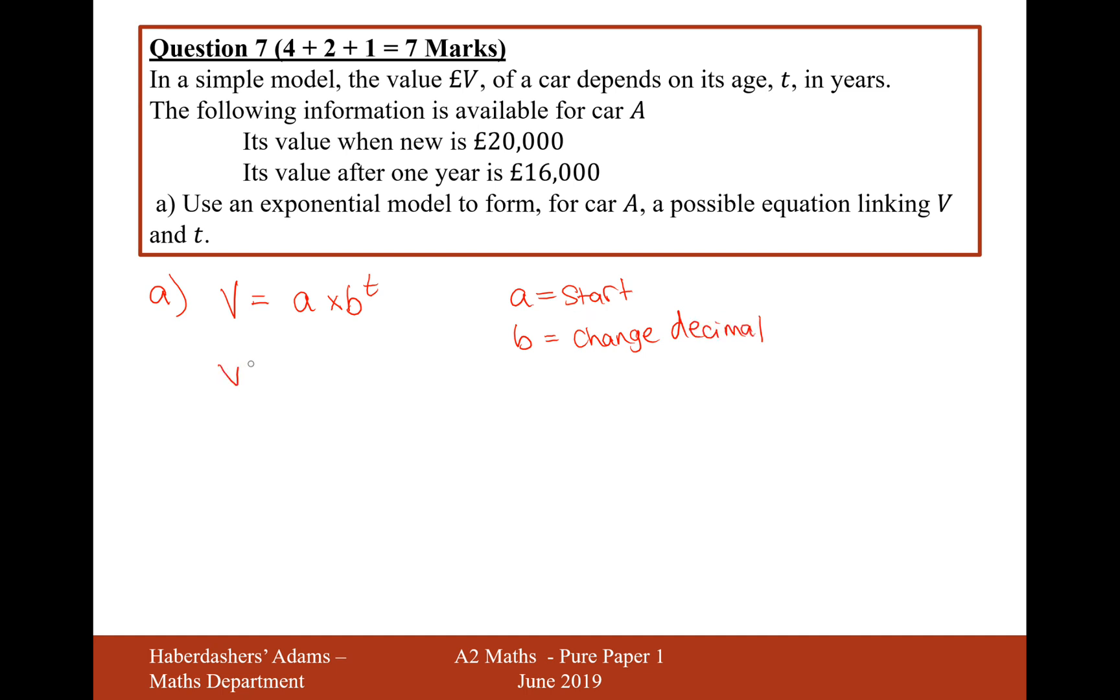So its starting value is going to be £20,000. I know what A is going to be equal to. Now we need to work out what B is going to be equal to, and I need to work out the decimal multiplier change from £20,000 to £16,000.